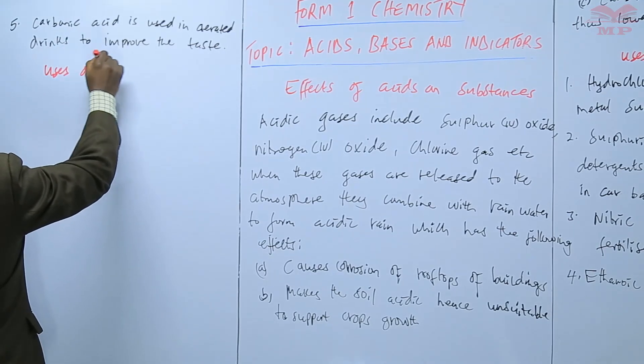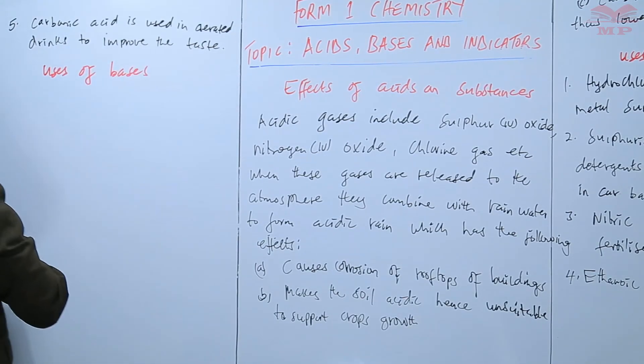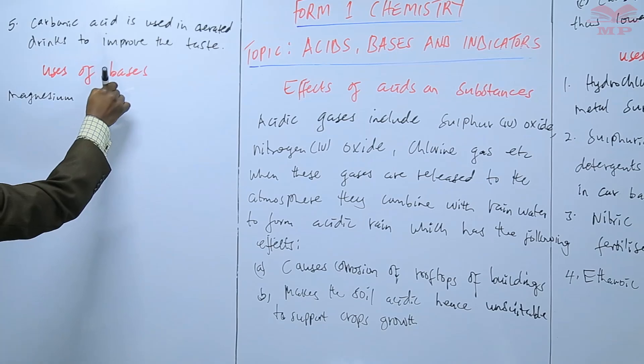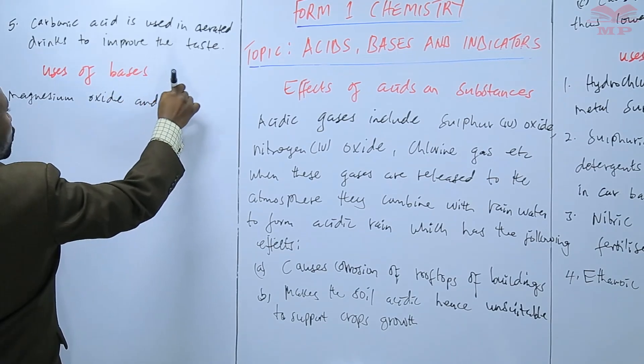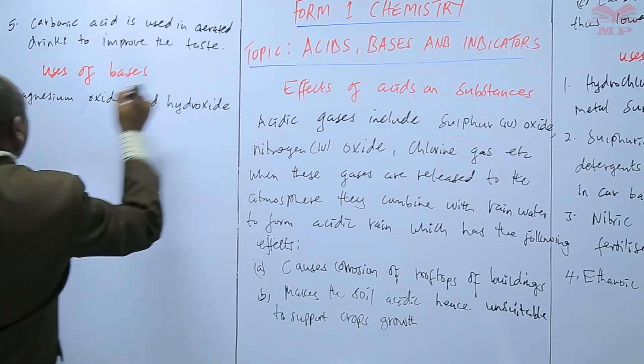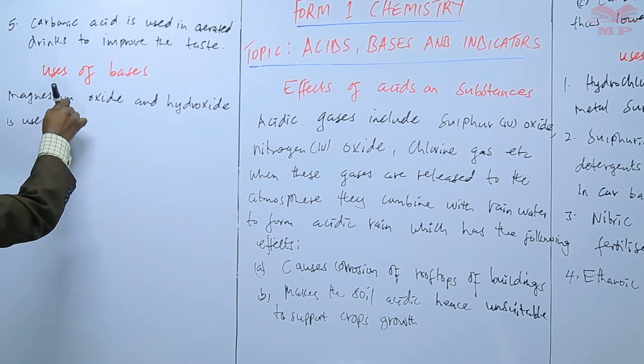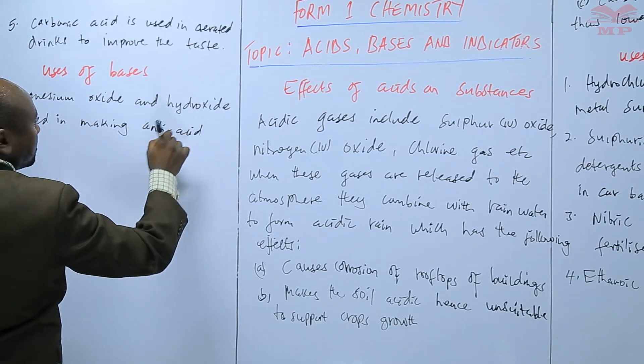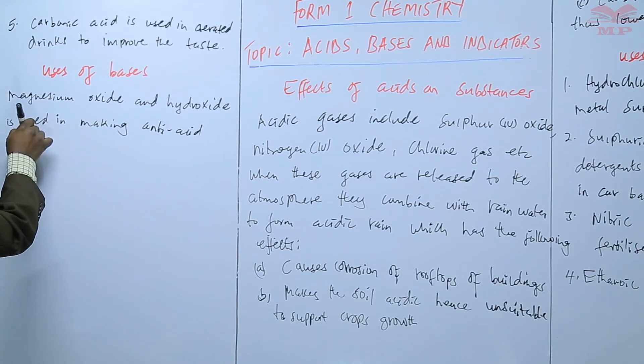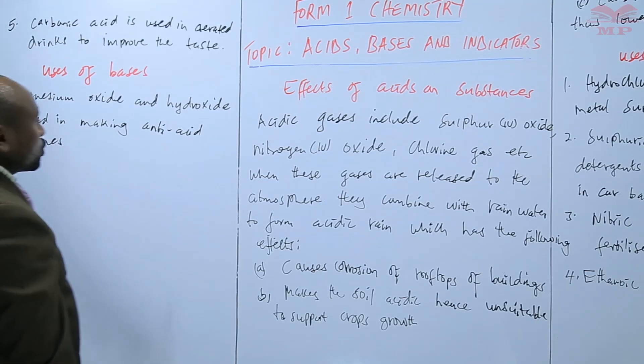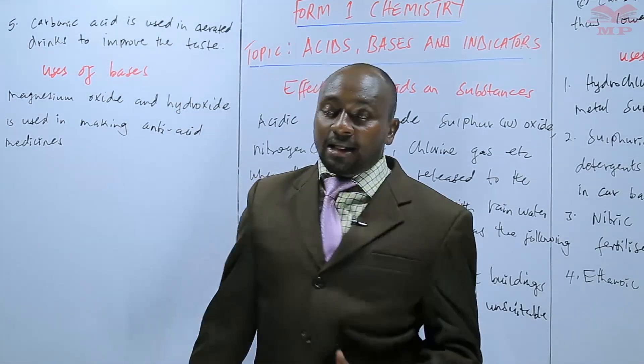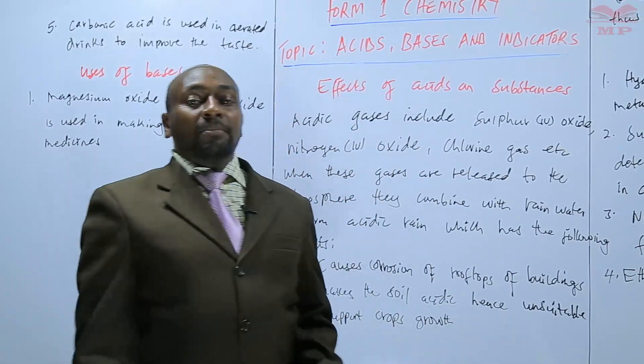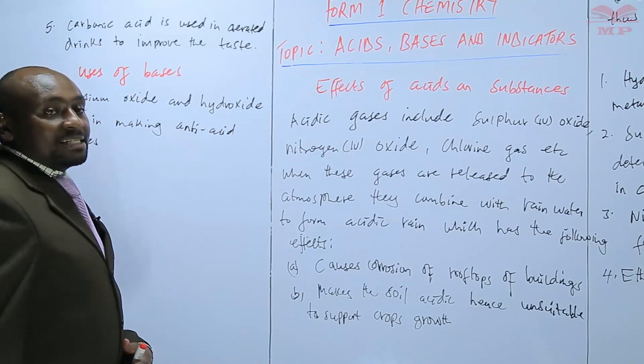You can also have the uses of bases, and you can say that magnesium oxide and hydroxide is used in making anti-acid medicine. Those medicines that are usually used to reduce acidity, especially in the stomach, they are called anti-acids, and they contain magnesium oxide and magnesium hydroxide. So they help to neutralize acidity in the stomach.